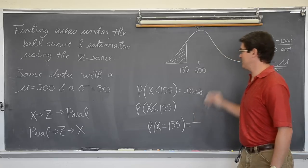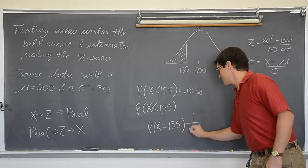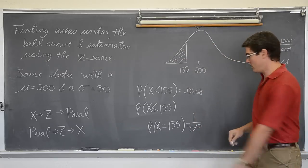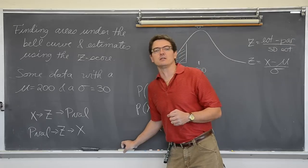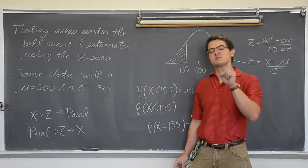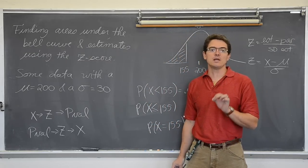That is one specific outcome. If this is continuous, there is an infinite number of possibilities. Well, 1 over infinity is zero. When you are talking about bell curve calculations, the probability of observing one specific outcome is always zero.